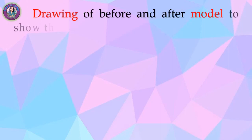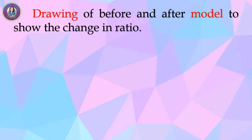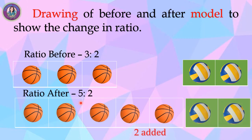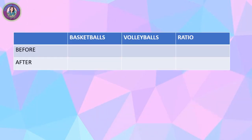We can use a drawing of a before-and-after model to show the change in ratio. The ratio before is 3 to 2 — three basketballs and two volleyballs. The ratio after is 5 to 2 — five basketballs and two volleyballs. Or we can make a list to show the change in ratio using a table.